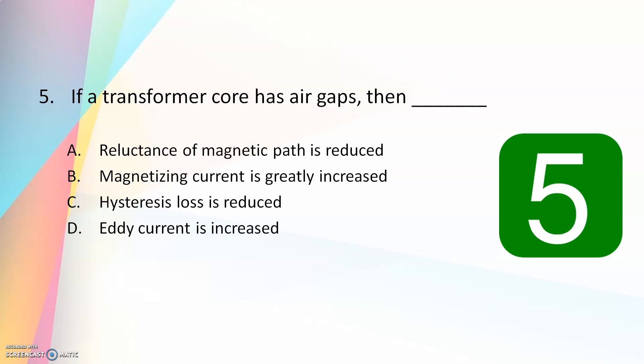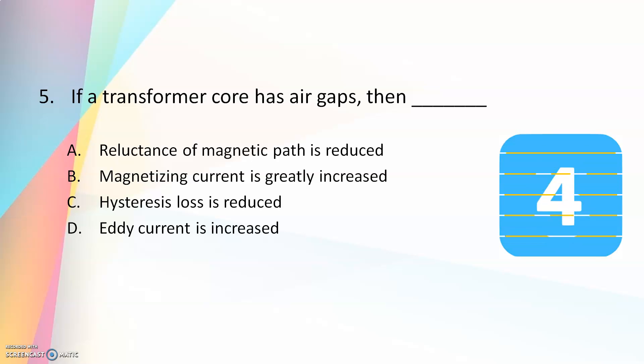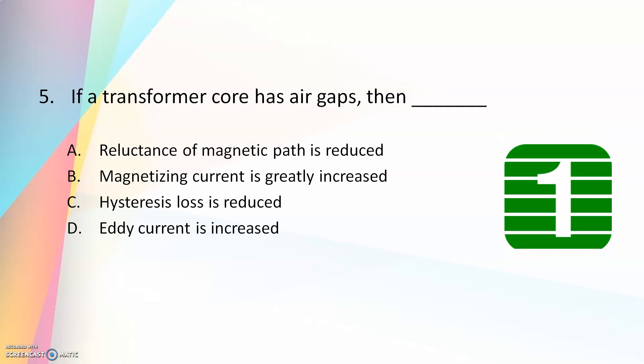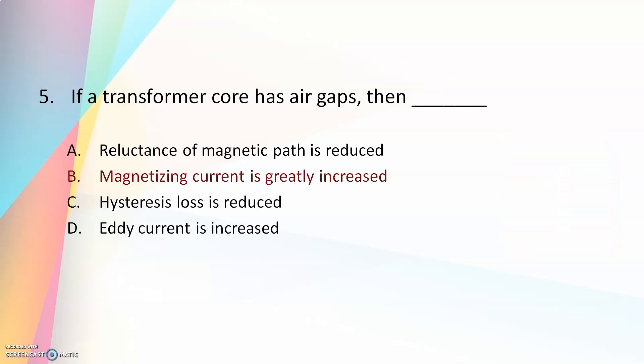Fifth question: if a transformer core has air gaps, then — reluctance of magnetic path is reduced, magnetizing current is greatly increased, hysteresis loss is reduced, or eddy current is increased. The answer is magnetizing current is greatly increased. If the core has air gaps, the magnetizing current is increased.